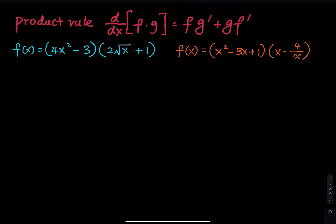Finding the derivative of these two functions using the product rule. The product rule states that when you take the derivative of a product of two functions f times g, that is equal to f times g prime plus g times f prime.